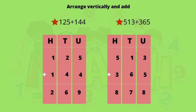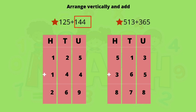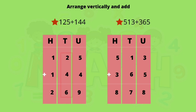Arrange vertically and add. The addition numbers are given in horizontal form, so first arrange them vertically, then add. First sum: 125 plus 144. Arrange vertically — hundreds: 1, tens: 2, units: 5; plus hundreds: 1, tens: 4, units: 4. Adding from the units side: five plus four is nine; two plus four is six; one plus one is two. So the answer is two hundred and sixty-nine.